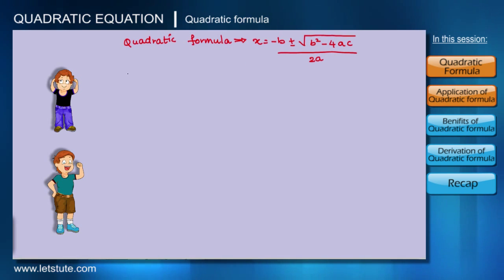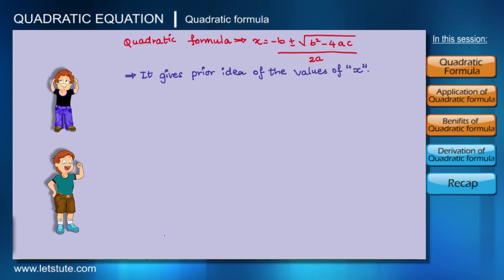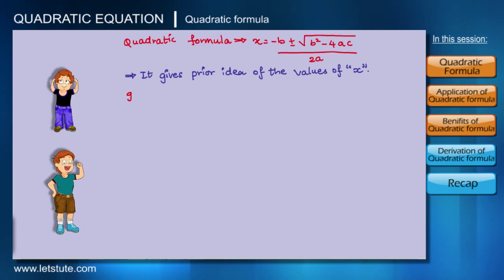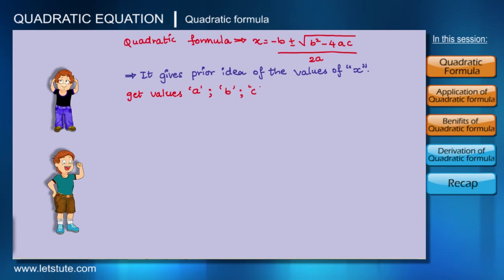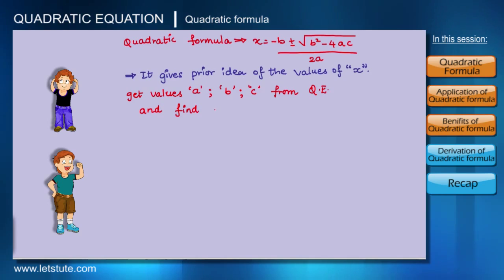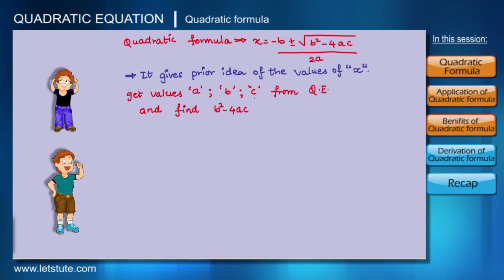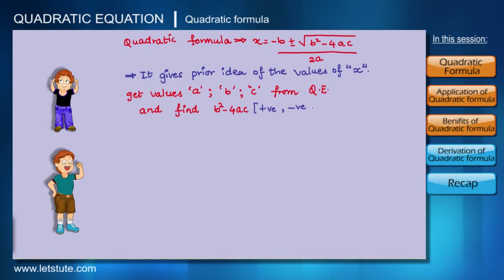I also wanted to tell them the other benefits of this formula. It gives you a prior idea of what your values of x are going to be. Once you know how to get a, b, and c from any quadratic equation, you can find the value of b² minus 4ac. This expression can have three types of values: it can be positive, it can be negative, or it can be zero.